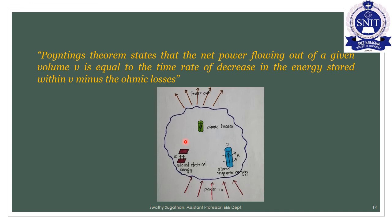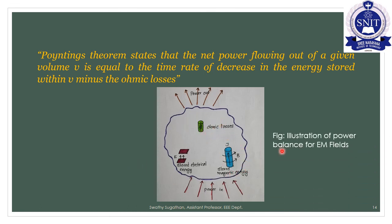A figure illustrates this: consider a volume with power leaving it. The Poynting theorem gives the power balance — relating outgoing power to stored electric and magnetic field energy and ohmic losses — providing the illustration of power balance for electromagnetic fields.